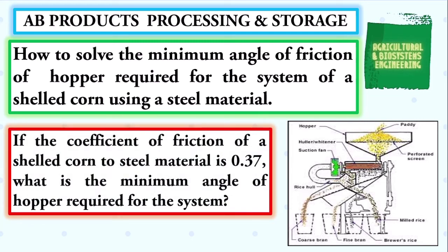If the coefficient of friction of a shelled corn to steel material is 0.37, what is the minimum angle of hopper required for the system?